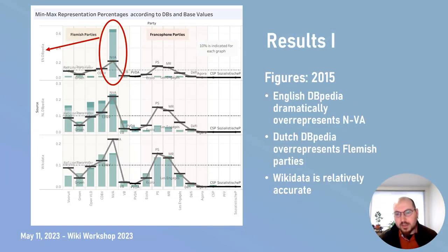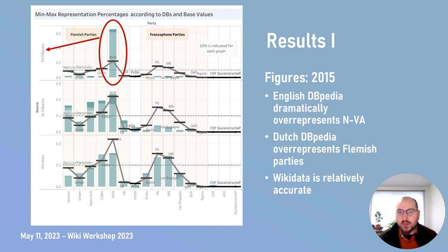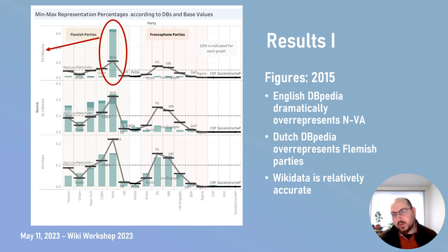Less dramatically, in terms of Flemish parties, Dutch DBpedia tended to over-represent Flemish parties. For example, CD&V, the Christian Democratic Party, members appear to be 20 percent of the parliament in Dutch-language DBpedia, but in reality they constitute about 12 percent. Finally, Wikidata provides a rather accurate picture of Belgian party shares in the national parliament compared to the others. There are some under-representations of some Flemish parties; however, only Wikidata gives an accurate representation of the Wallonian parties compared to the others.